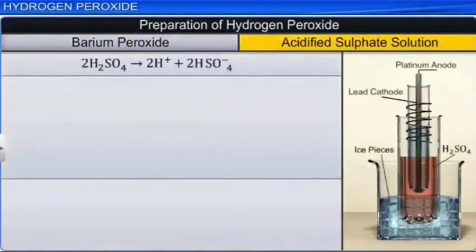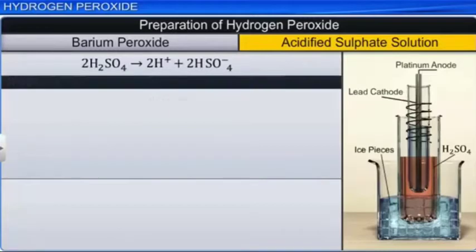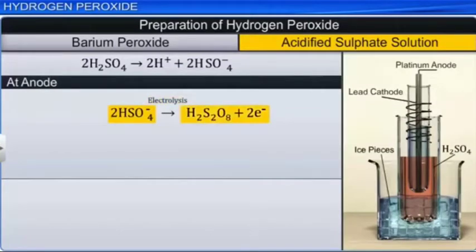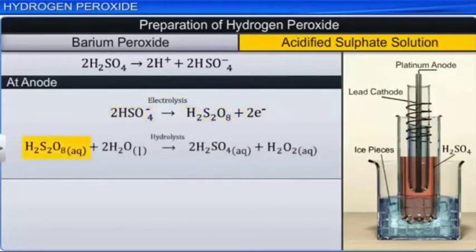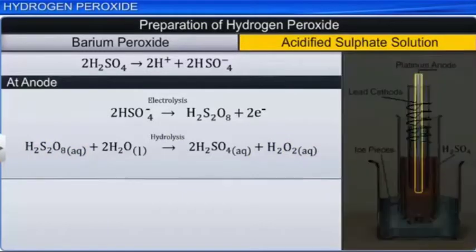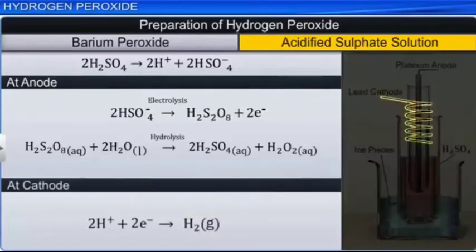You can also obtain hydrogen peroxide from 50% sulfuric acid solution. The solution is subjected to electrolytic oxidation to yield peroxidized sulfuric acid. The peroxidized sulfuric acid formed undergoes hydrolysis to form hydrogen peroxide. During electrolysis, hydrogen peroxide is formed at the anode. Peroxidized sulfuric acid is formed as a byproduct at the anode. Hydrogen gas is evolved at the cathode.